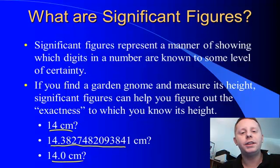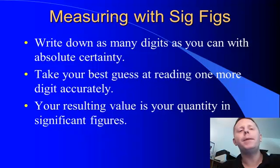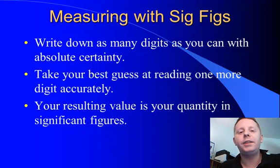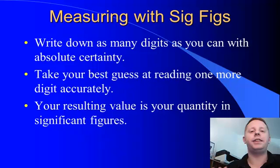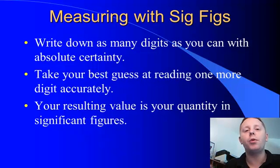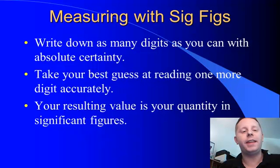What do these different numbers mean? Well, measuring with sig figs is pretty straightforward. First off, write down as many digits as you can with absolute certainty. Then take a look and see if you can estimate, or take your best guess at, one more figure. When you've done that, write down your answer. You will have written the correct number of significant figures in your measurement.